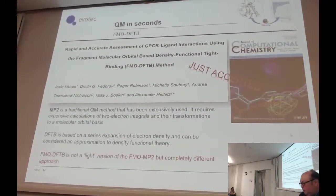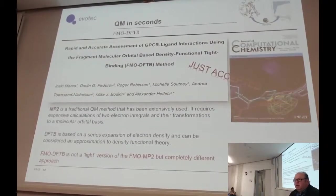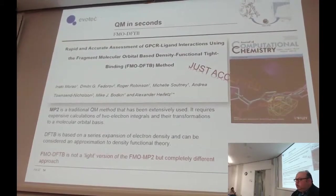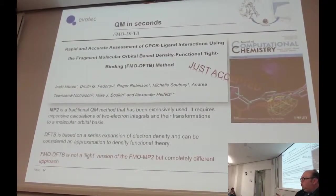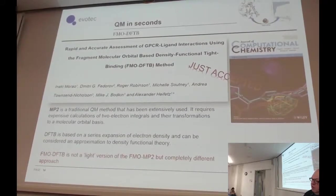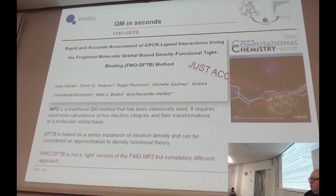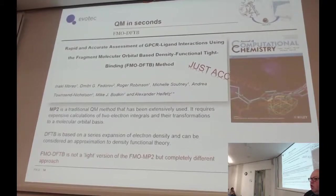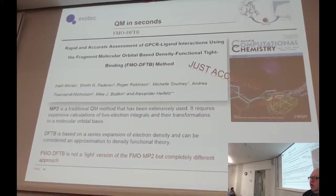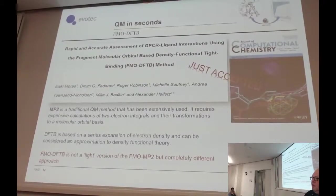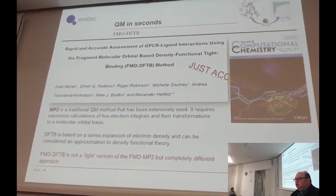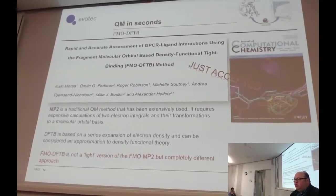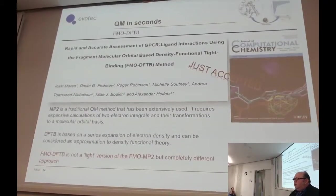Until now, the problem with FMO was that it required high-resolution structures. So if you're working on a project, it requires that you have at least one crystal structure. Then you can dock and do other things. But usually this is a luxury — in most projects you don't have a crystal structure for your particular ligand of interest. Usually you do homology modeling, you do docking, and then most QM methods, including FMO, fail. So we wanted a very quick FMO — something we could use like minimization tools or even MD, something that can work in seconds.